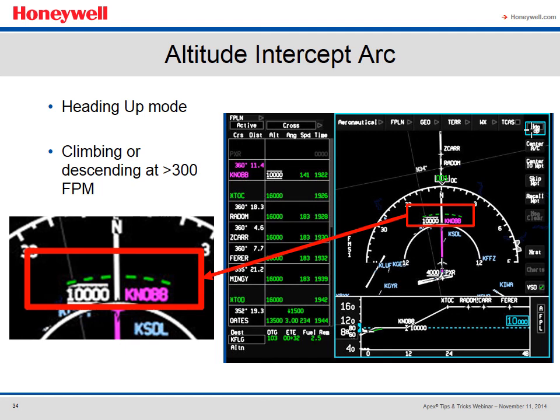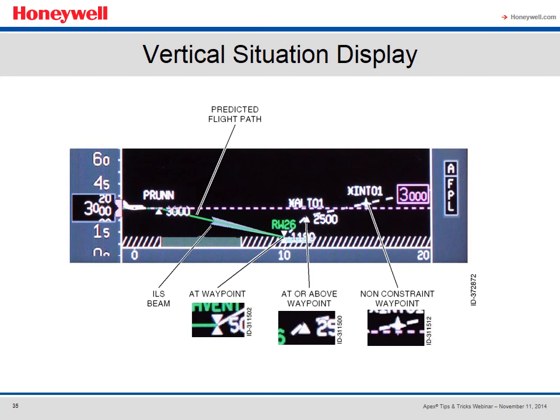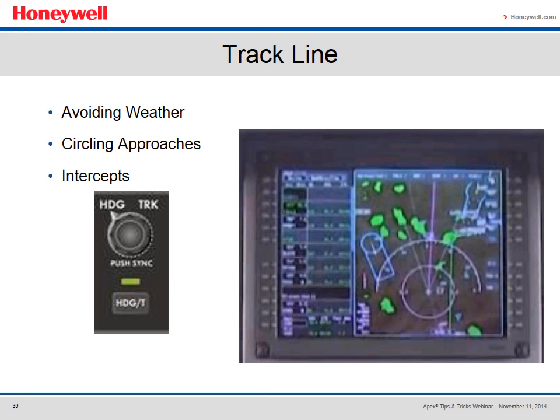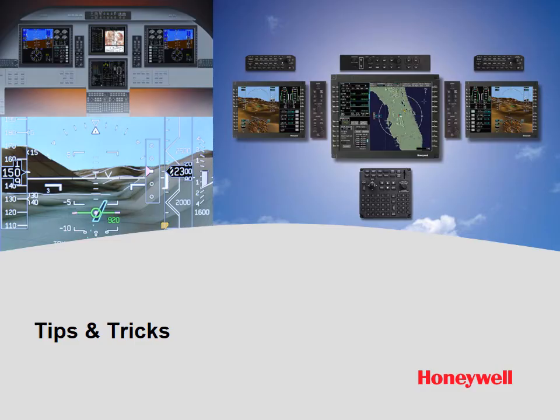At the bottom of the display is the VSD, or vertical situation display. The VSD shows the vertical flight plan, your actual flight path, the terrain along your flight plan, or the terrain along your track if you're not following the flight plan. It also shows altitudes like top of climb, top of descent, altitude constraints, ILS glideslope, and more — great for both IFR and VFR operations. On the guidance panel, you can easily switch between heading and track. Using track means you don't need to correct for wind drift — very useful for circling approaches, intercepting a course, or avoiding weather.